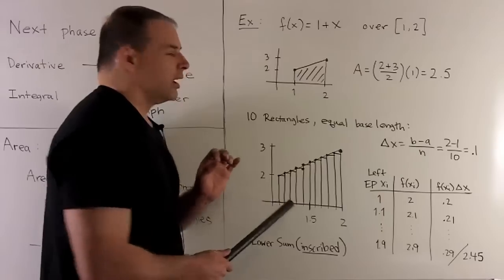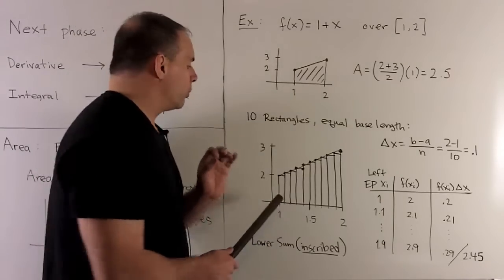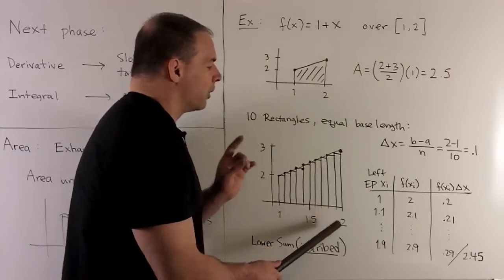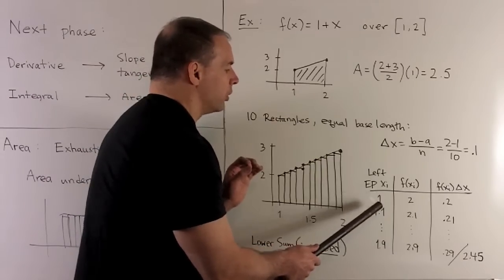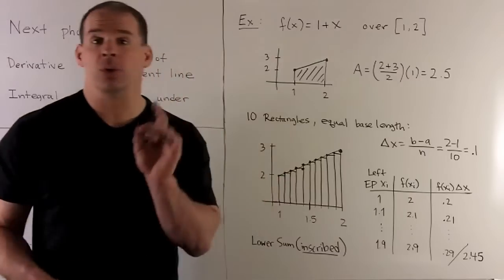So, we're going to start at 1, and then we just keep moving by 0.1. Now, note we want 10 rectangles, so to get 10, we'll start with 1, go to 1.1, and then go all the way up to 1.9. So, we don't use 2.